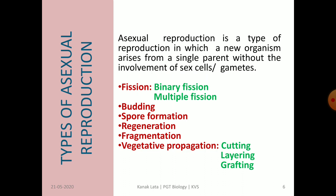Now we will see the types of asexual reproduction. As we have seen, asexual reproduction is a type of reproduction in which new organisms are formed from a single parent without the involvement of gametes or reproductive cells. There are different types of asexual reproduction.